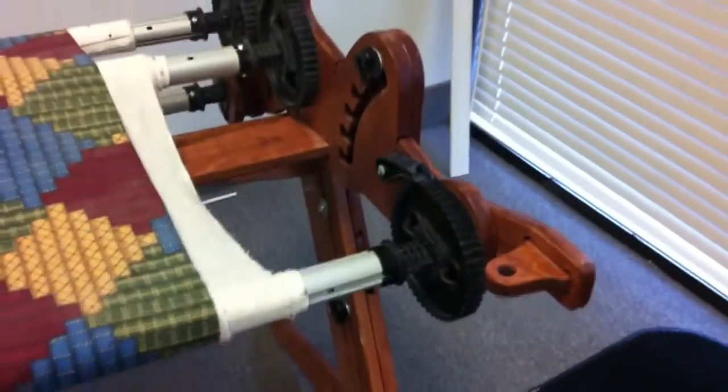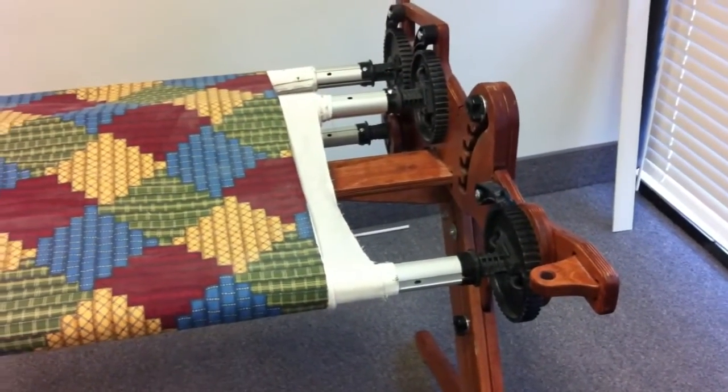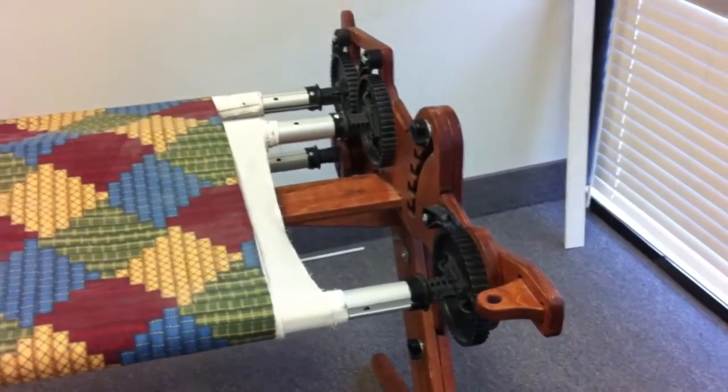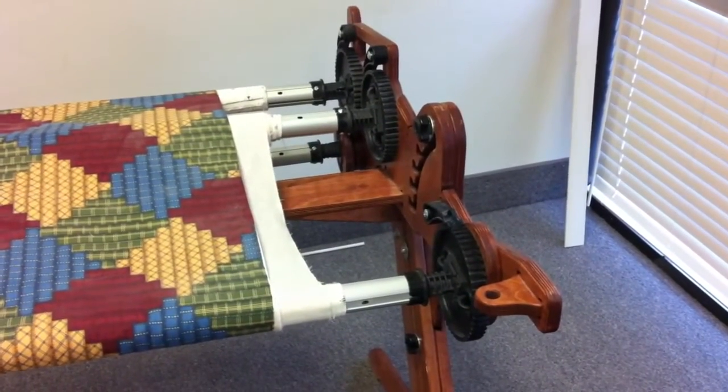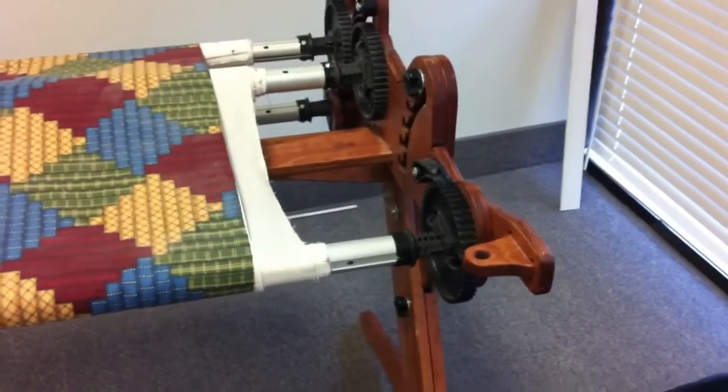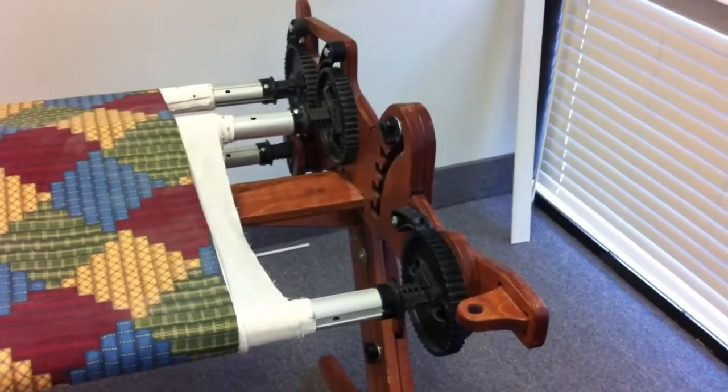This particular frame is actually stained a fruit wood, and that's an option that you can get if you want. You can stain it yourself, or you can have the Grace Company stain it. You don't have to stain it, but you can if you'd like.